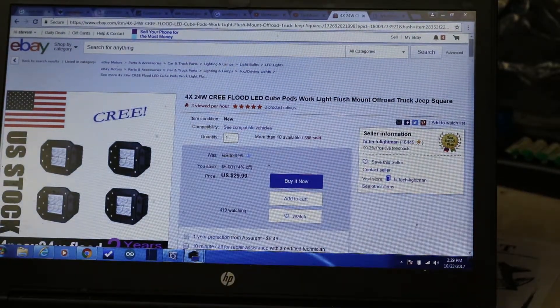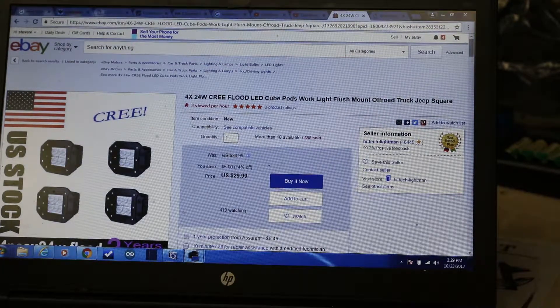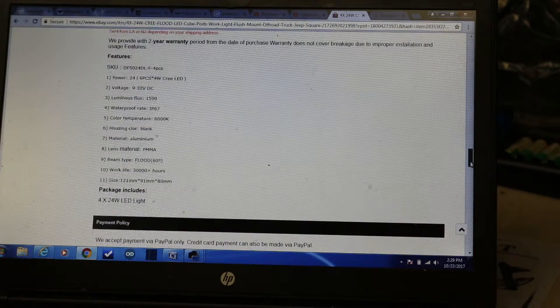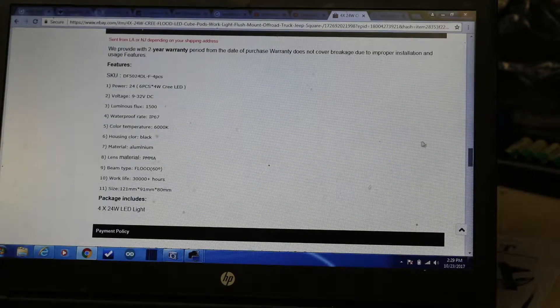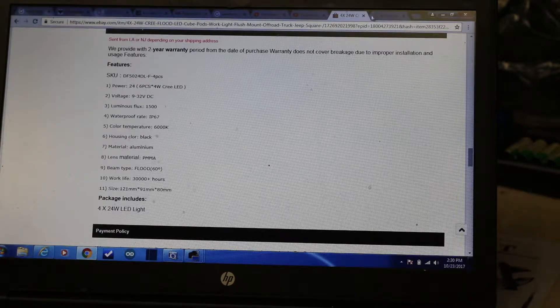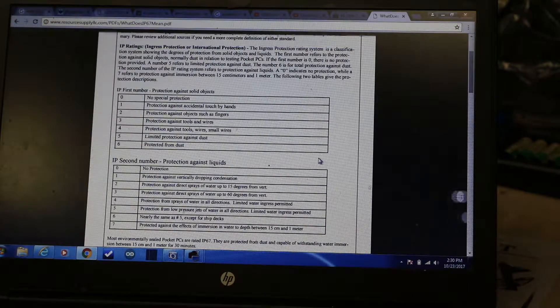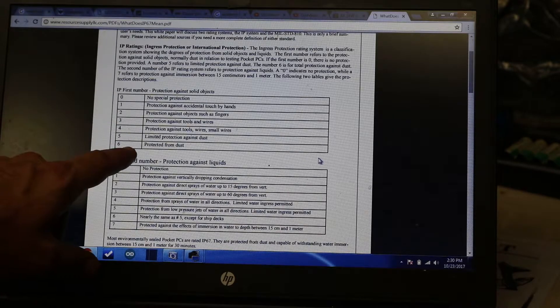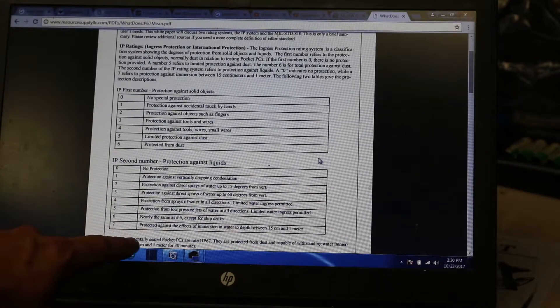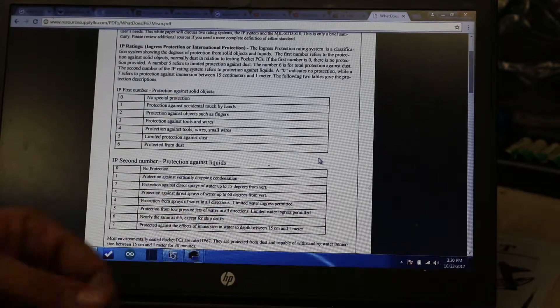This is what I ordered: four 24-watt Cree LED floodlight pods for $30 with free shipping. If we go down in the description, they claim these are waterproof with an IP67 rating. For those who don't know what that means, I have this tab explaining the IP rating. For IP67, the first number 6 means protection from dust, and the last number 7 means protected against the effects of immersion in water to a depth between 15 centimeters to one meter, which is about three feet.